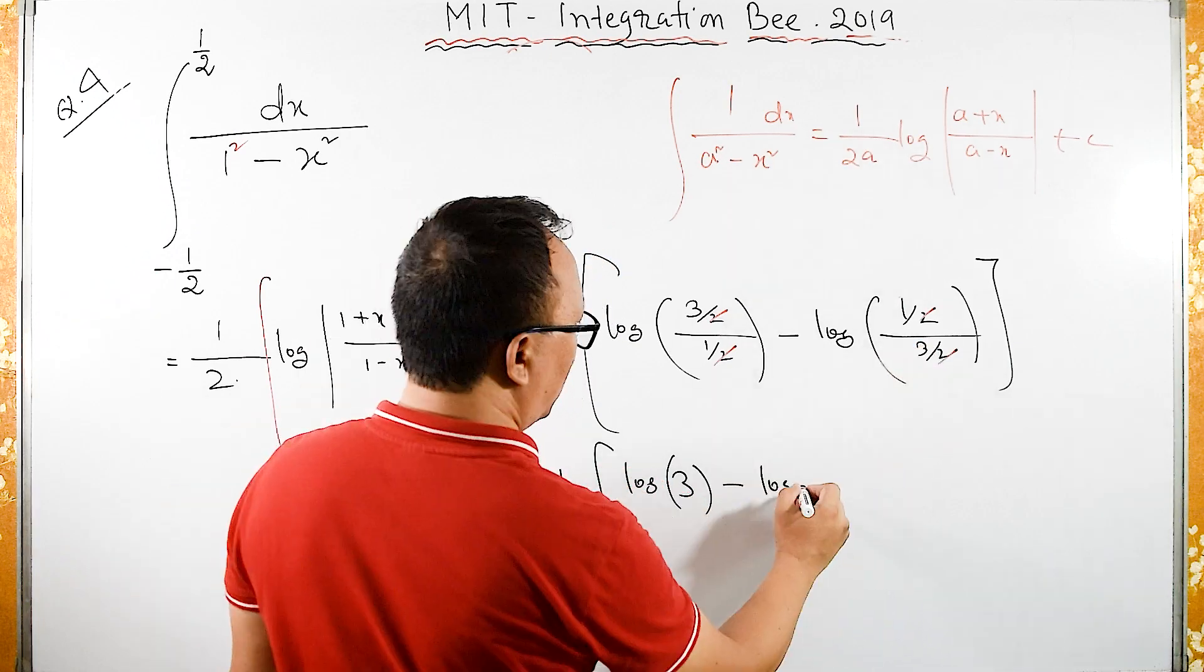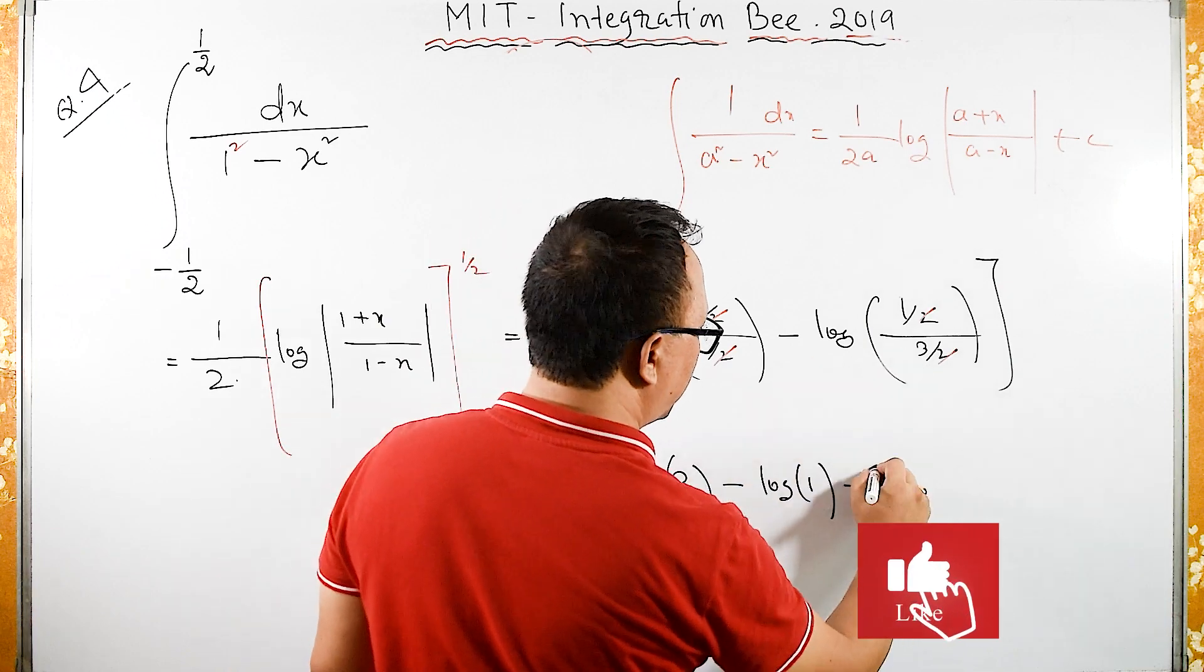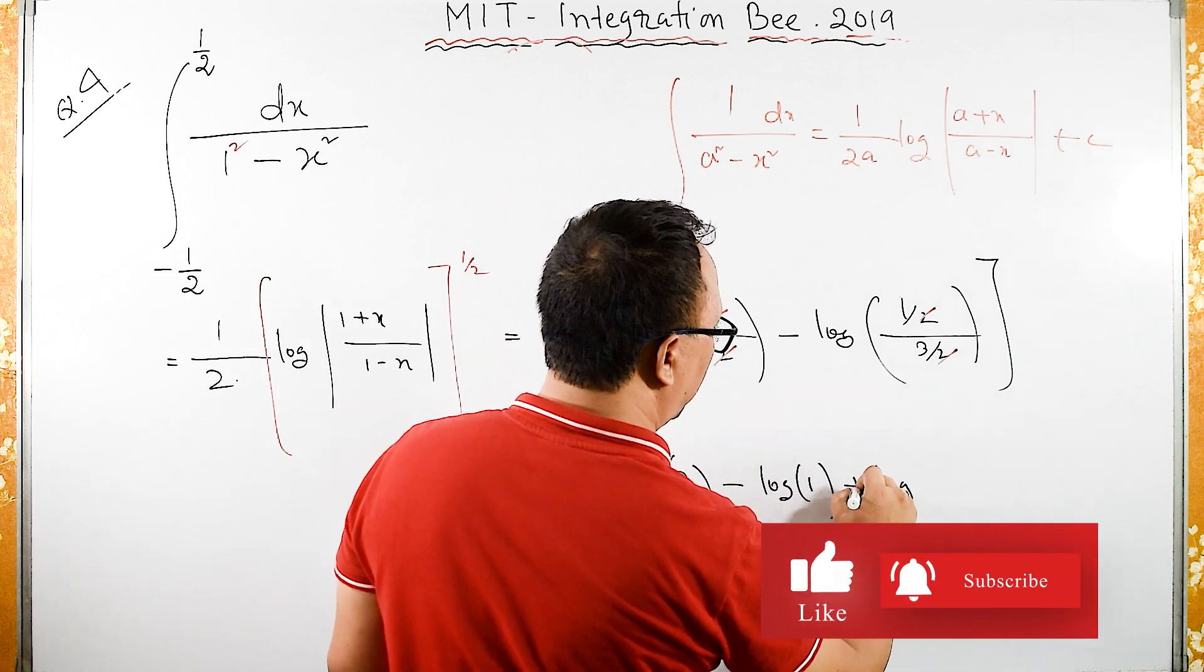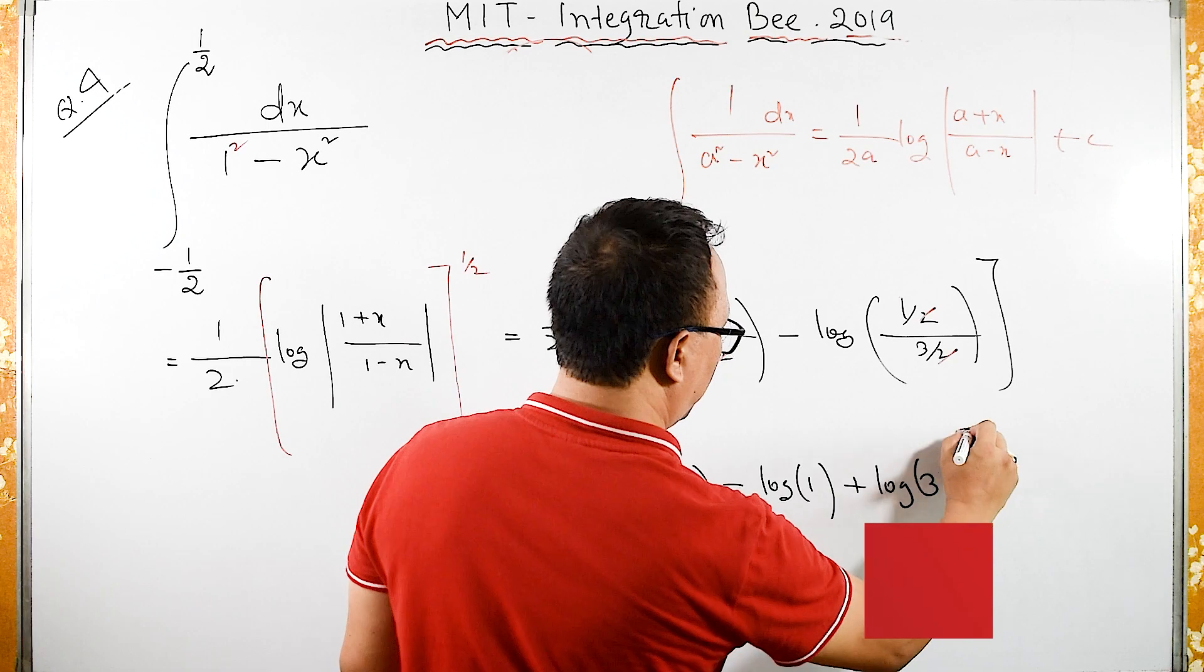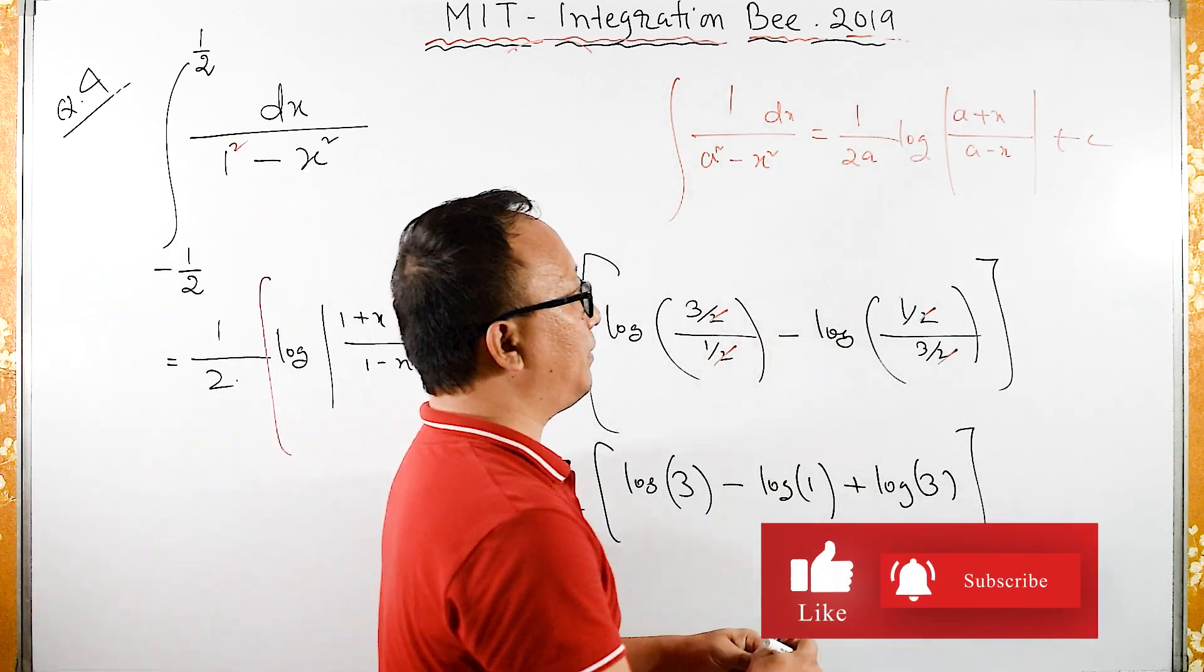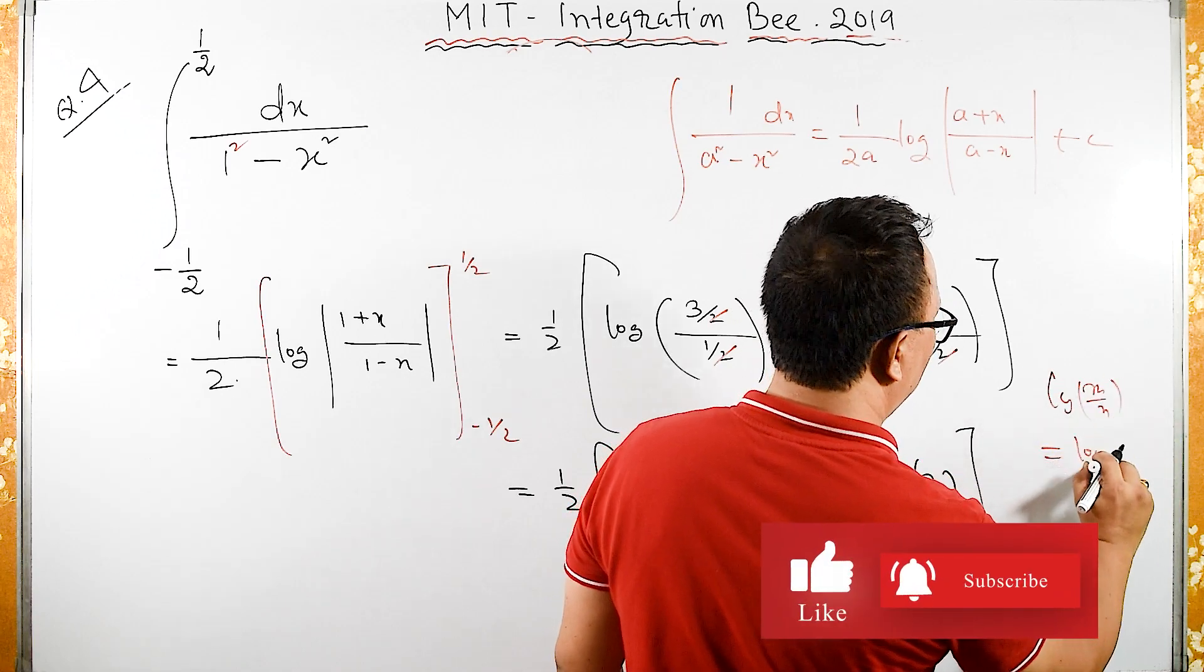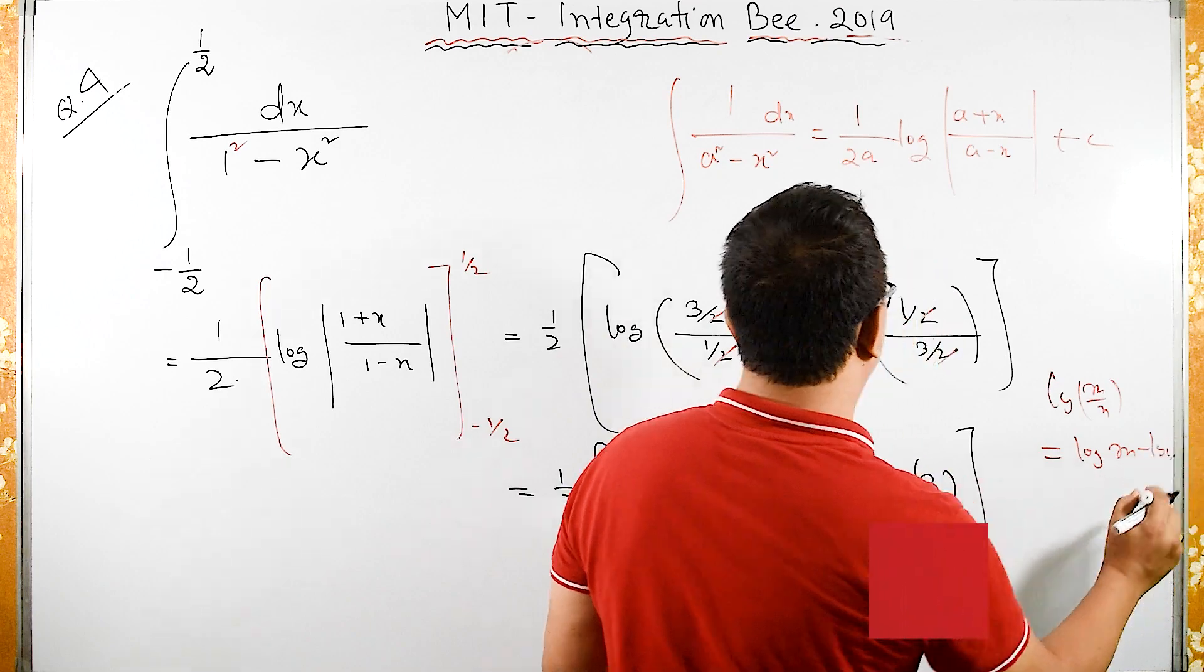1 upon 3. Log of 1 minus minus plus log of minus minus plus log of 3. Why? Because log of m by n is same as log m minus log n. Remember log of m upon n is same as log of m minus log of n.